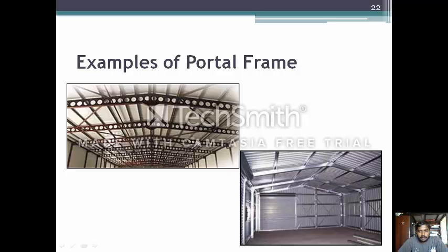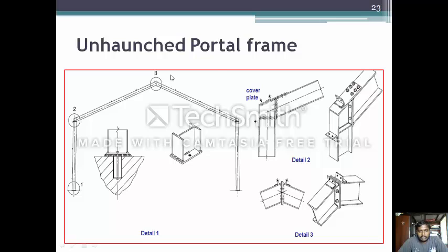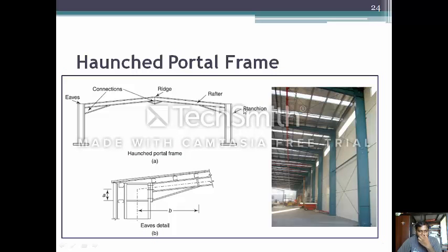An example of a portal frame has no bracing. In an unhatched portal frame, there is no connection between the column and the frame. In a haunched portal frame, there is a connection between the eaves and the column. This is the main difference between the unhatched and haunched portal frame.